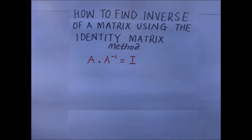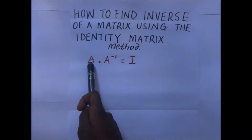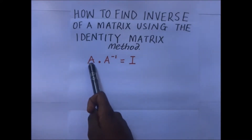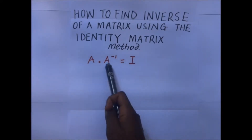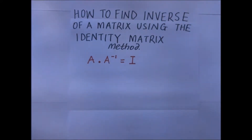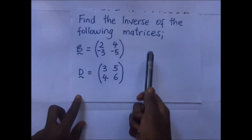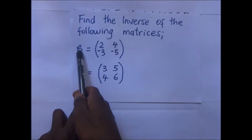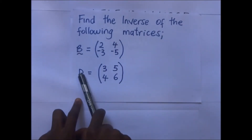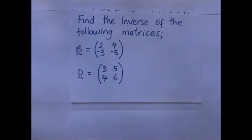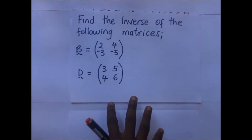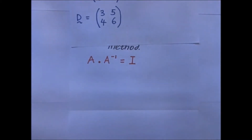So all we need to do is take the matrix whose inverse we want to find, substitute it here alongside the identity matrix, and try to get the inverse. We are going to use the same examples from our previous videos: find the inverse of the following matrices using the identity matrix method.